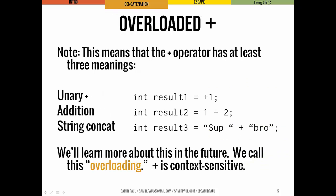The plus operator means three separate things. We've seen it as the unary plus, which has really high precedence — like `int result1 = +1`, the unary plus just means positive one. We've seen it as addition with numbers, so `int result2 = 1 + 2`. And now we've seen it concatenating strings, like result3 equals "sup bro". We call this idea overloading — the plus operator is context sensitive; what it does depends on what kinds of inputs we give it.